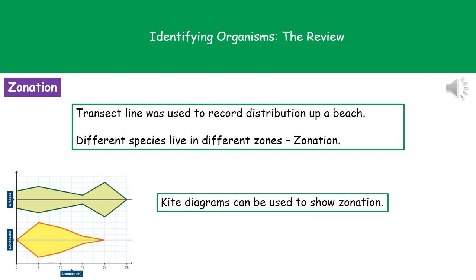We can use a special type of diagram called a kite diagram to show zonation. For example, looking at dandelions and grasses: on the x-axis we have distance from the start point, and on the y-axis we have the population size of each species. There is a midpoint represented by a horizontal black line. At each sample point — say 5 meters — we lay a quadrat and count how many of each species are present. If we had 10 dandelions, we'd place 5 below the midline and 5 above it and mark a cross. We do this along all sample points for both species, then join the dots to create the distinctive kite shape, which shows the distribution and zonation of those species within the habitat.